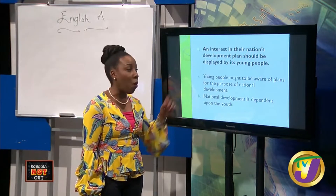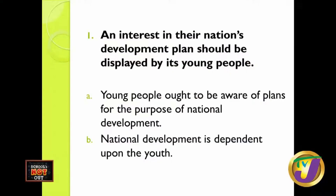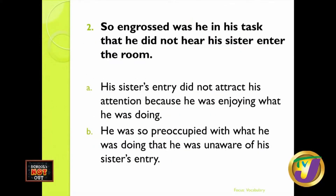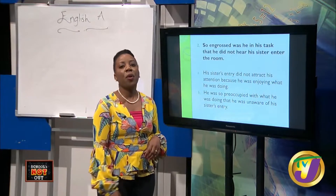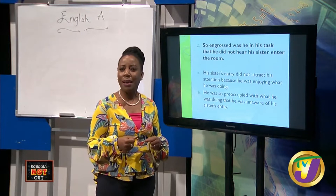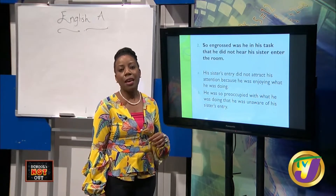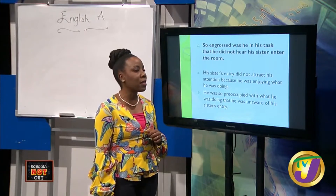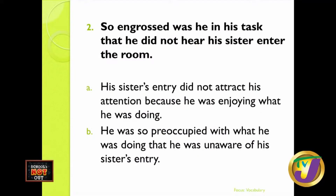I hope you see clearly why neither A nor B works as the equivalent sentence. Note that sometimes a single word may throw off the meaning. We are going to look at different grammatical elements that function as distractors in the options. Let's look at example two: so engrossed was he in his task that he did not hear his sister enter the room. What does engrossed mean? He's concentrating, working hard, and because he's so involved in his work, he didn't hear his sister enter.